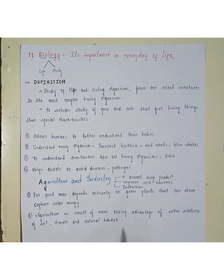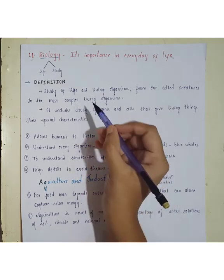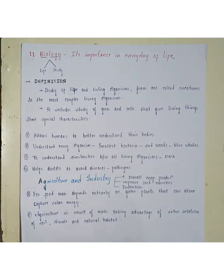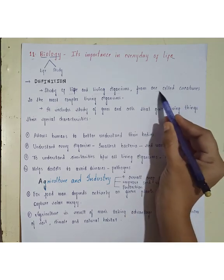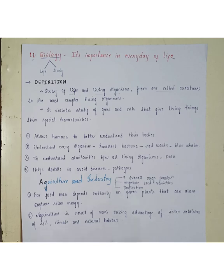Let us first discuss about the word biology. Biology means 'bio' means living organisms or life, and 'logi' means study. So biology itself means the study of living organisms or life. The definition of biology is: the study of life and living organisms, from one-cell creatures to the most complex living organisms. It covers the entire living organisms — from single-cell creatures like bacteria and viruses, to the most complex living organisms, which are human beings. So biology entirely covers all living forms on the planet.